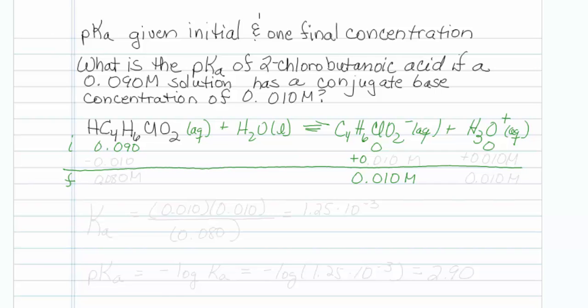Well, this must be plus 0.010 molar. This must be plus 0.010 molar here under the hydronium, and this must be minus 0.010 molar. So doing the math, this would be 0.080 molar acid that remains, and my hydronium concentration is 0.010 molar.